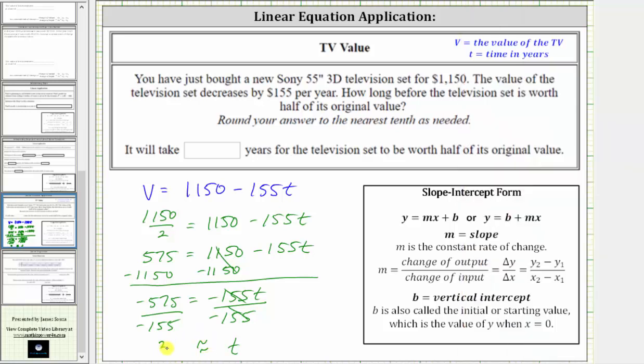So T is approximately 3.7, which means it will take approximately 3.7 years for the television set to be worth half of its original value. I hope you found this helpful.